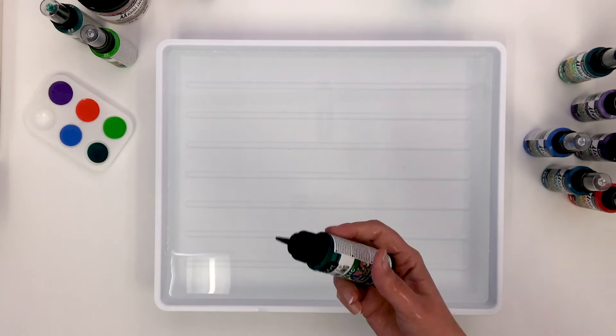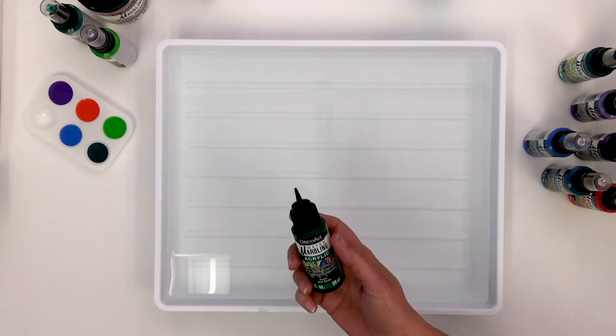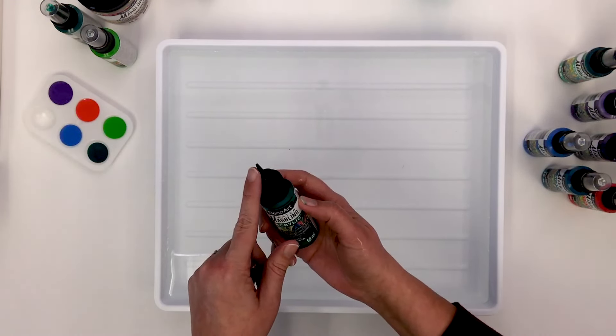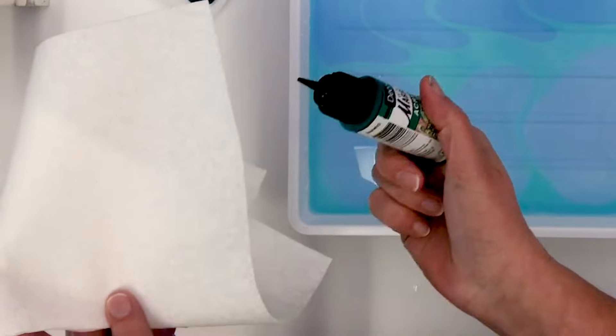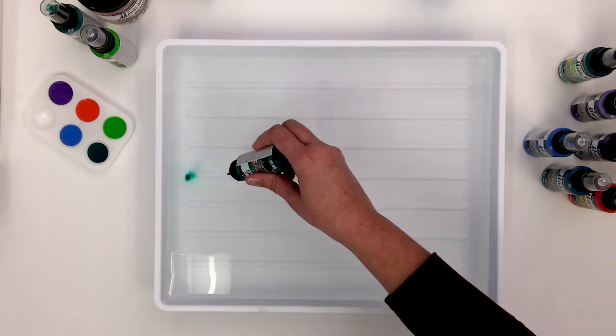Now comes the fun part. Select a paint color you want to be your base color. Shake the bottle gently to dispel any settling that may have occurred. Air bubbles can form on the dropper. To take care of this, hold a paper towel to the tip. This is a simple way to keep air bubbles out of the design.